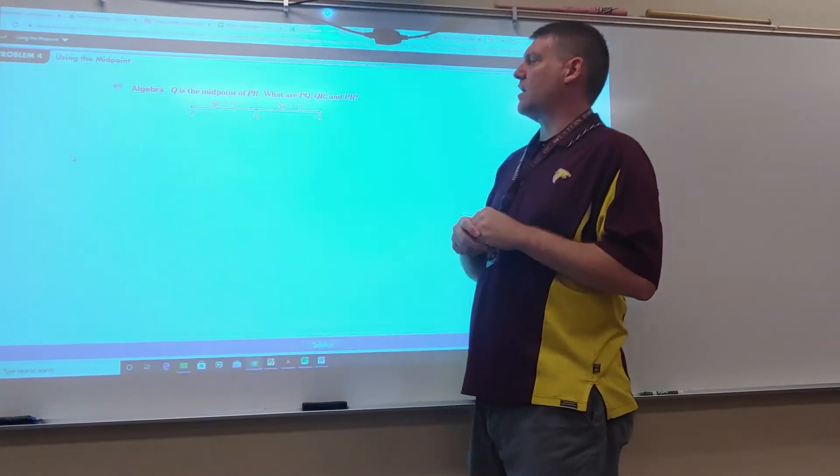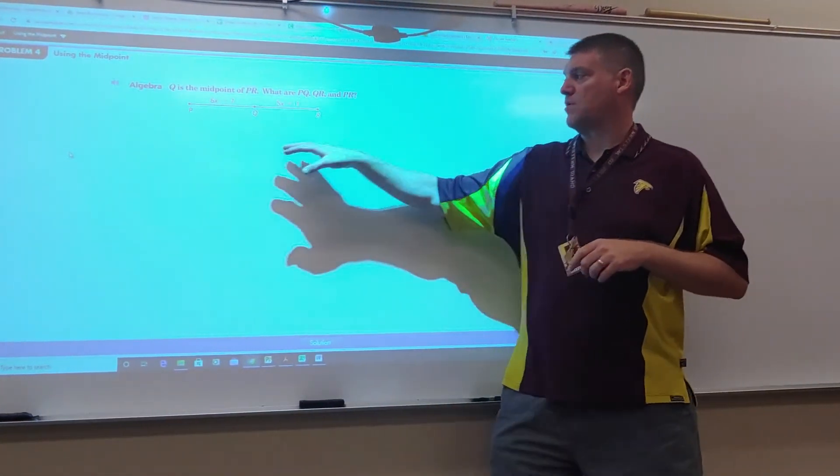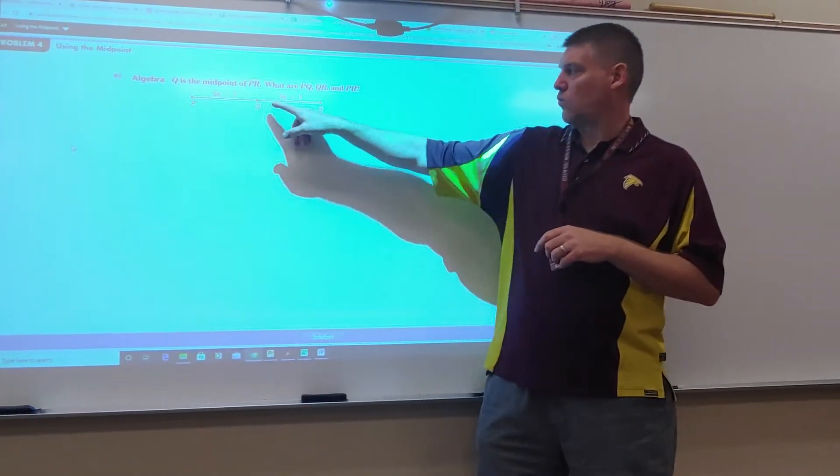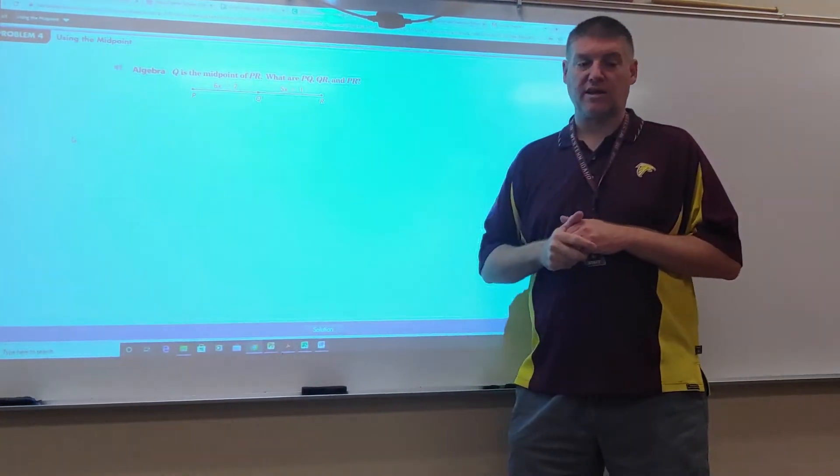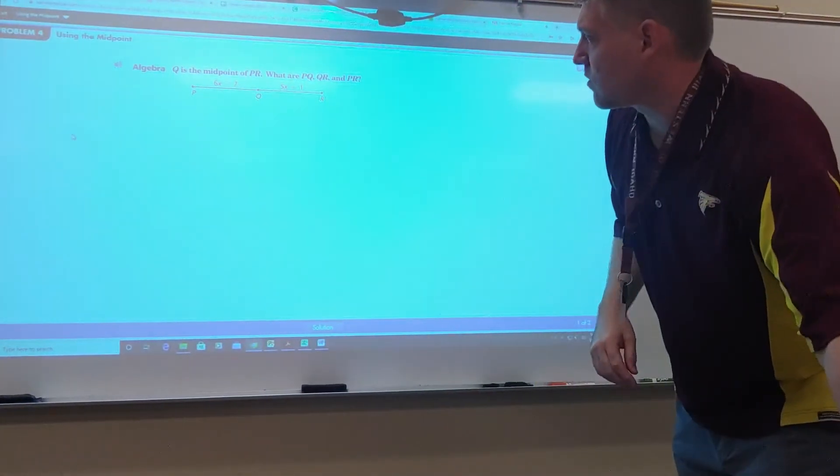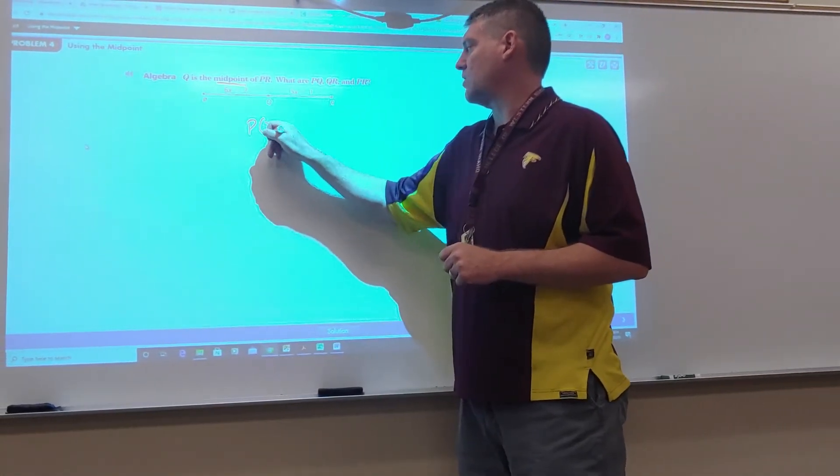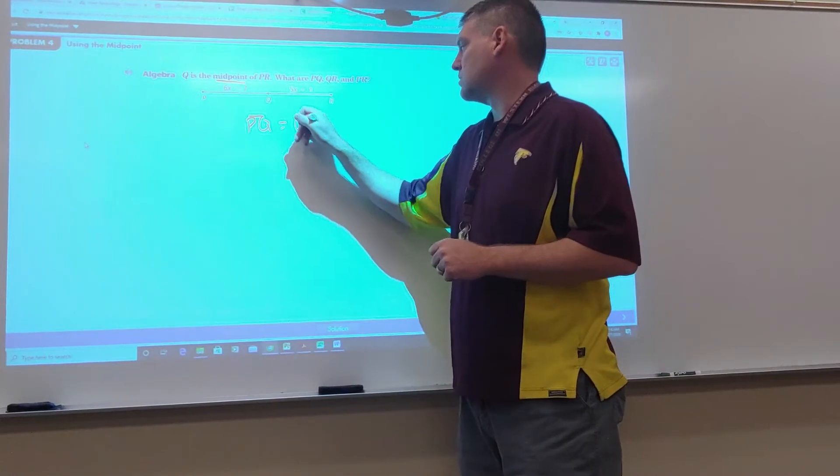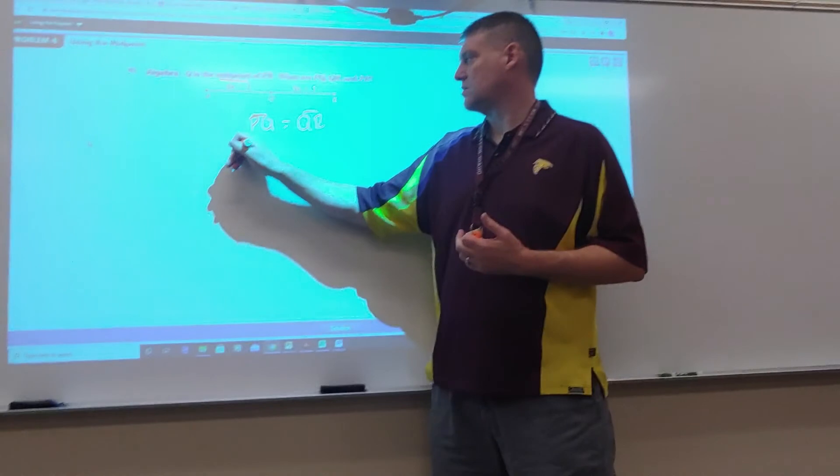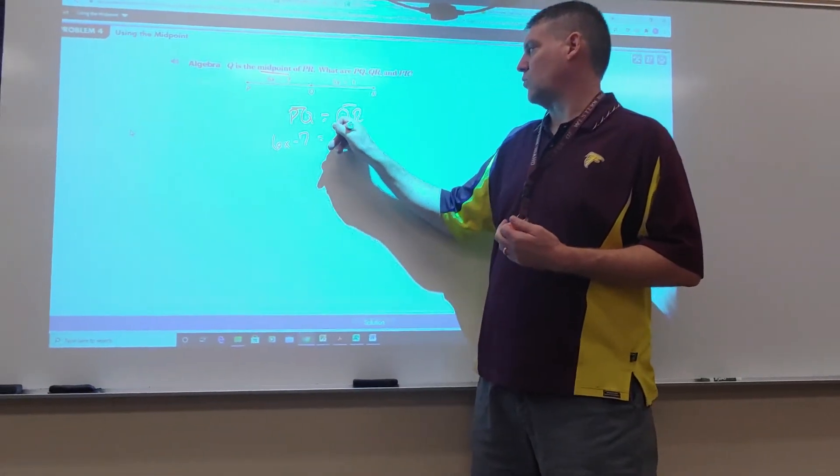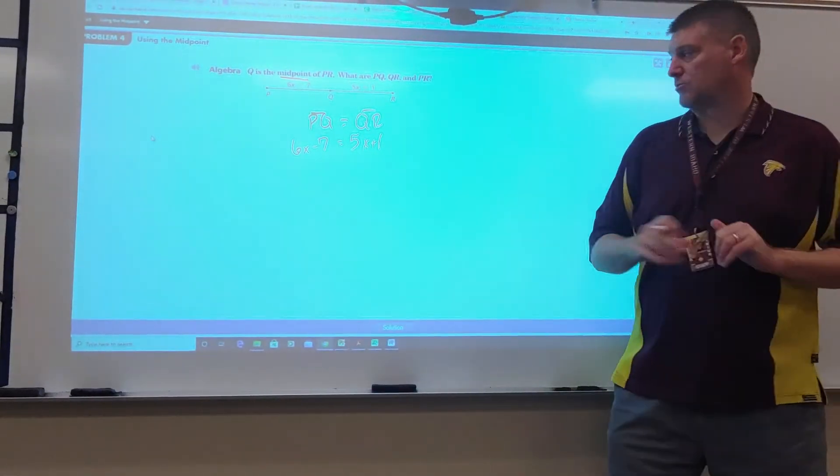Q is the midpoint of PR. What are PQ, QR, and PR? I know that as soon as I see this word midpoint, I know that PQ and QR are equal. This is a key word. So then PQ equals QR. Now I'm going to substitute in each of these: 6X minus 7 equals 5X plus 1. Now we've got to work on our algebra.